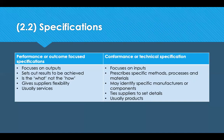A performance or outcome specification outlines what the product or service is to do or achieve, allowing the supplier an element of innovation in deciding how the service or product should be delivered. Performance specs are usually for services. They allow various options on a requirement to be considered, promoting innovation and competition within the marketplace. Often known as output or outcome-based, they're used in things like facilities management, cleaning, and catering — giving the supplier flexibility. It's about the what, not the how.